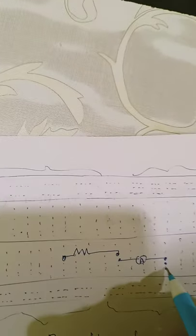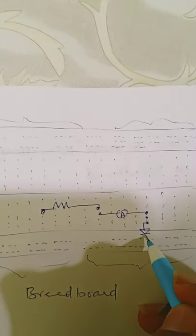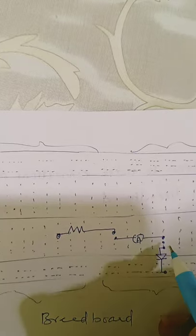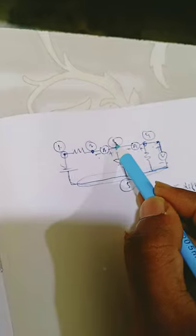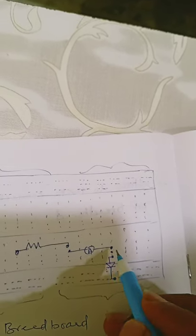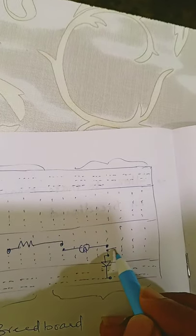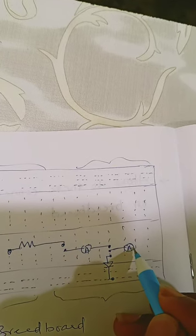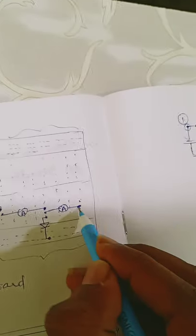At node 3, I need three elements connected. I have already connected two — one side of the ammeter and the diode. Now I need to connect one more element (another ammeter end). That gives us a different potential, which is node 4.